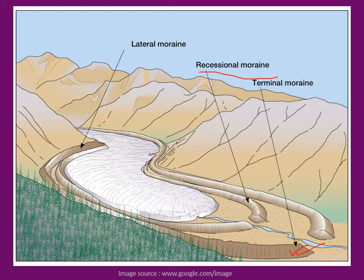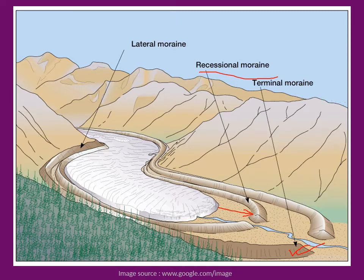Sometimes it may happen that with these recessional moraines, in coming times when there was global cooling — meaning much more glacial activity — the increase of glacial land mass will occur. These recessional moraines will then be pushed by the glacier ice mass. The recessional moraines, which were previously deposited in these positions, due to increased glacial activity and increased surface area of glacial ice mass, the ice mass now moves more towards down-slope areas and pushes these moraines to further down-slope areas. The moraines shift their position and now occur in a new position. These kinds of moraines are known as push moraines.